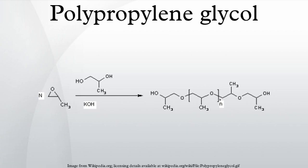Polypropylene glycol is produced by ring opening polymerization of propylene oxide. The initiator is an alcohol and the catalyst a base, usually potassium hydroxide. When the initiator is ethylene glycol or water, the polymer is linear. With a multifunctional initiator like glycerine, pentaerythritol, or sorbitol, the polymer branches out.